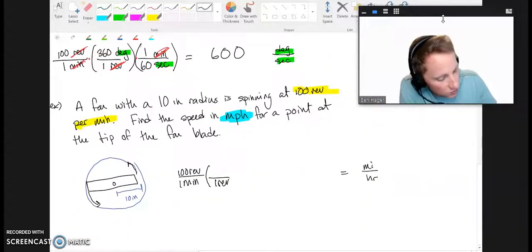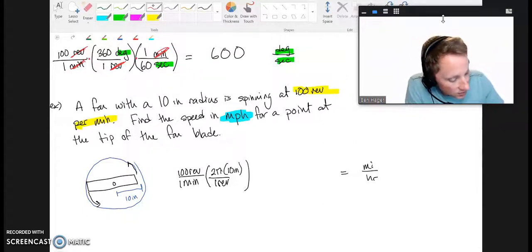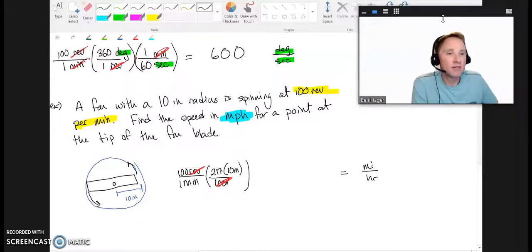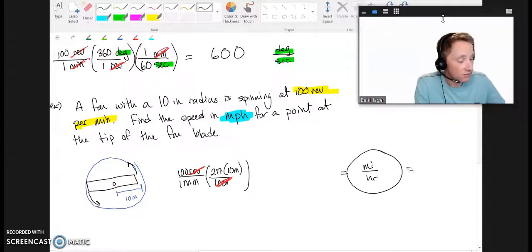I probably can't jump right to miles, but can I get a distance out of here? Yes, I can. Because one revolution is the distance around your circle. So, one revolution should be 2 times pi times the radius of your circle. And if you notice, the revolutions are now gone. And I am left with inches per minute. That's not quite miles per hour, but now I just need to convert my way to it.